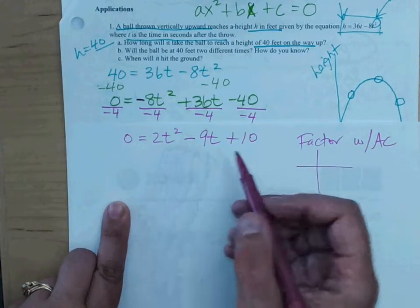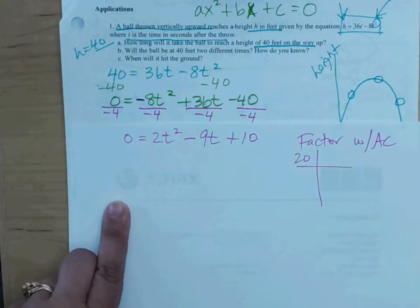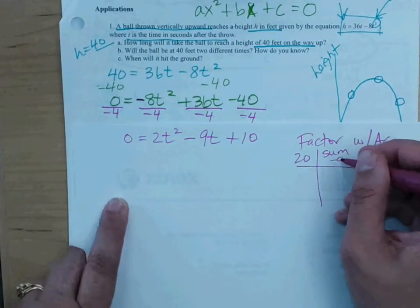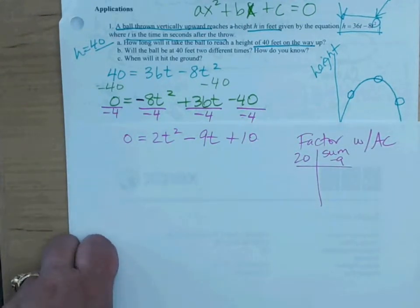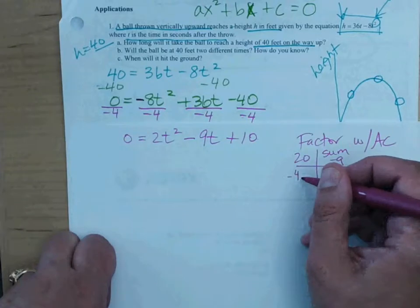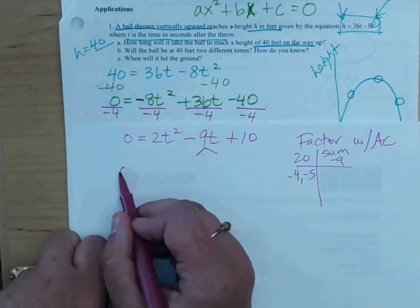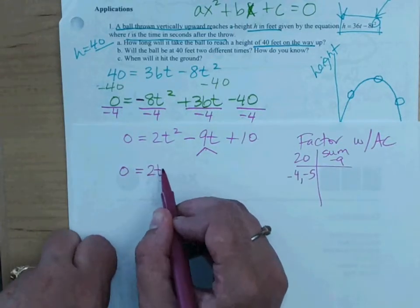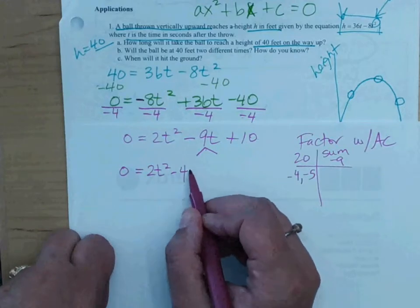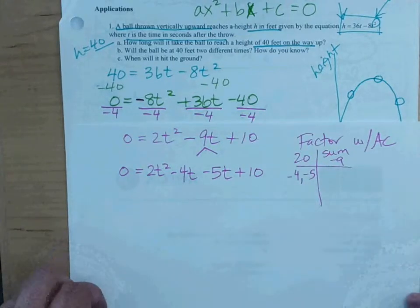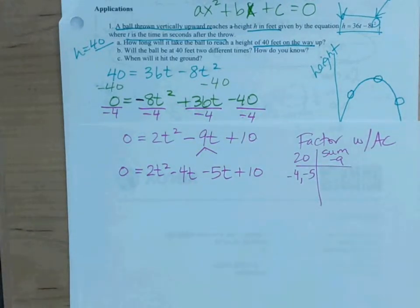When you factor using the AC method, what are you going to start by doing? Multiply A times C. Yes, and we get 20. Good. 2 times 10 gives us 20. That's A times C, and we're looking for a sum of what? Negative nine. Okay, can you think of two numbers that add to, multiply to 20, add to negative nine? What are they? Negative four, negative five. Yes. So now we break up that middle. We're going to still keep the zero. We're going to keep the 2t squared. Negative 4t minus 5t plus 10. We've broken it into four terms.